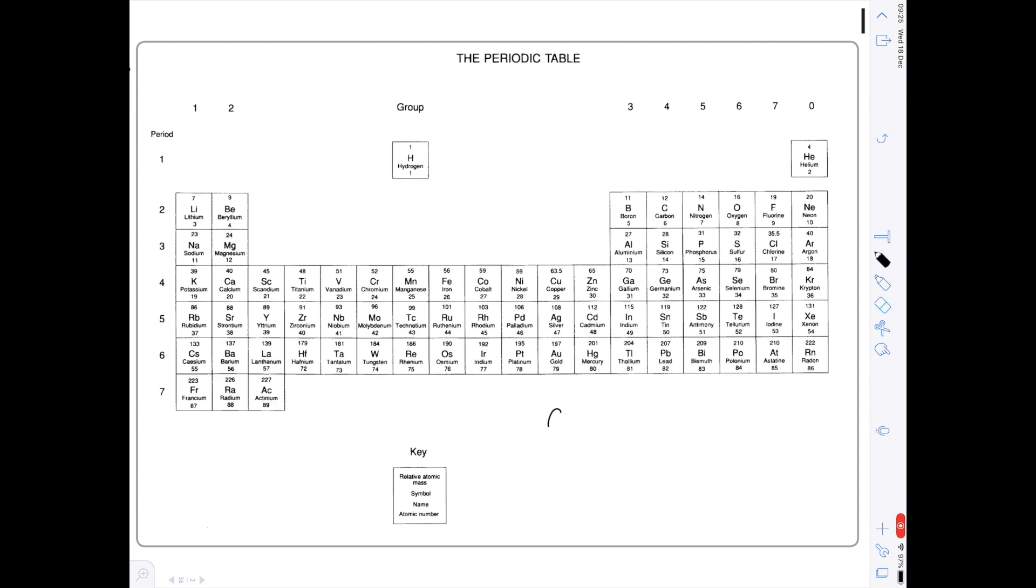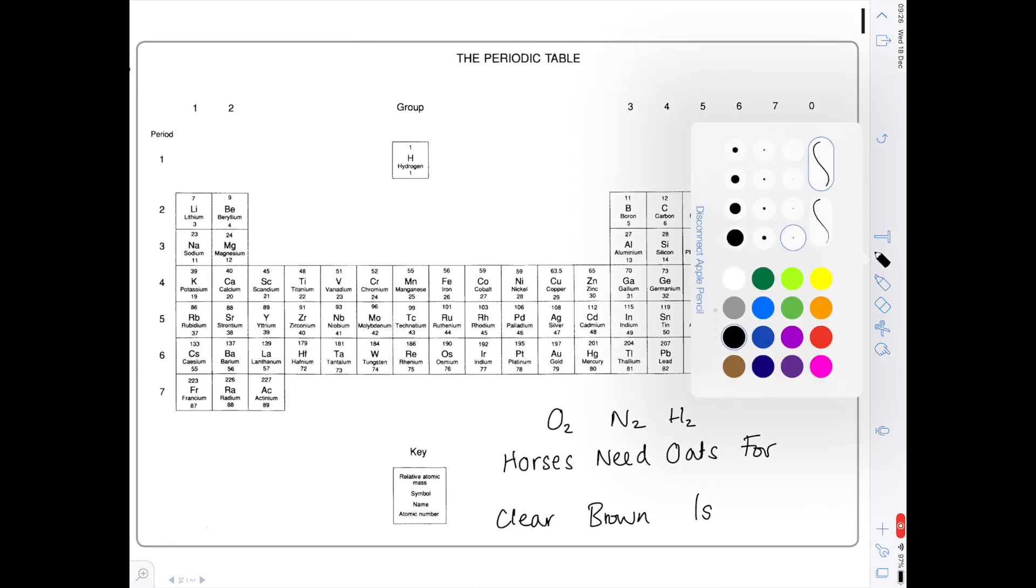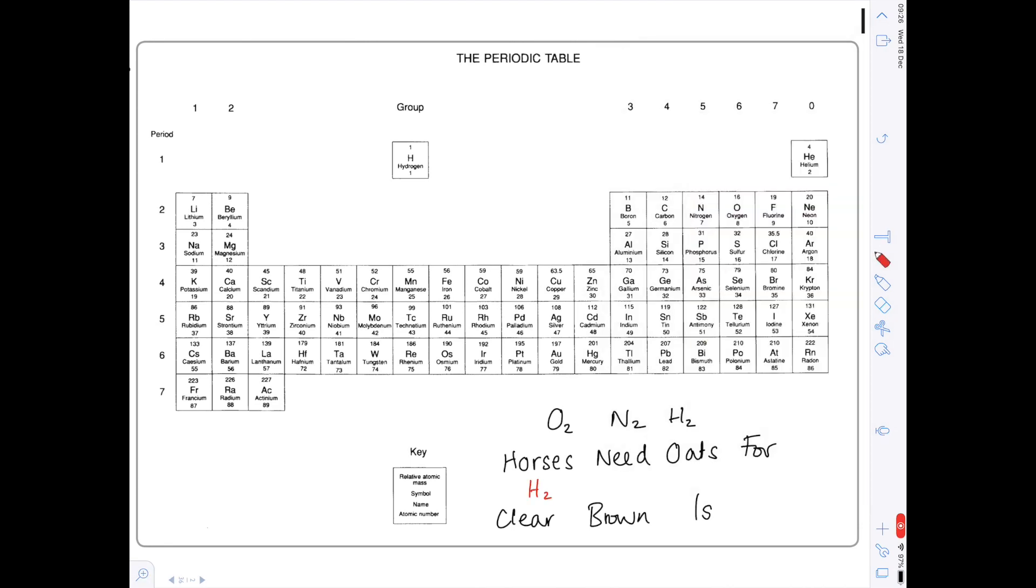I now want to touch on which elements are diatomic. You're just going to have to learn that some elements exist as two atoms. So oxygen, nitrogen, hydrogen, etc. This is going to be important when you write chemical equations, because otherwise you'll never be able to balance them if you haven't realized that hydrogen is diatomic, for example. Now my friend taught me this mnemonic: Horses need oats for clear brown eyes. I know it's weird looking eyes like that, but I'll explain why now. So what elements do these represent? Well, horses is hydrogen, need is nitrogen, oats is oxygen, for is fluorine, clear is chlorine, brown is bromine, eyes is iodine.